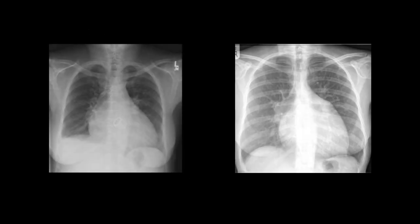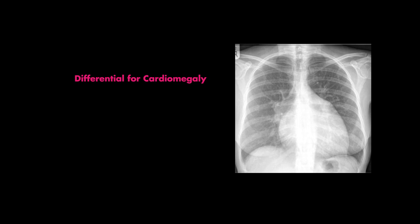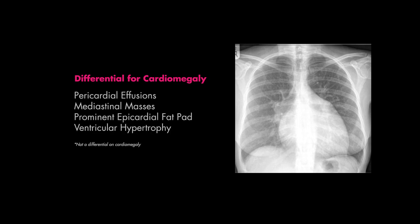Heart sizes larger than what we just mentioned can imply many things, but by far the most common is cardiomegaly, or an enlarged heart. The reason for this also has a long differential, but you should start thinking of things like pericardial effusions, mediastinal masses, or a prominent epicardial fat pad. Over time, patients with long-standing hypertension can also result in left ventricular hypertrophy, leading to a larger heart.